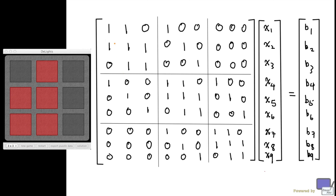Recall that each column represents the action of pressing the corresponding square. So if you look at column 1, it corresponds to pressing square 1, which is the top-left square, and the squares that are affected are square 1, square 2, and square 4 — those entries that have the value 1 in the column.